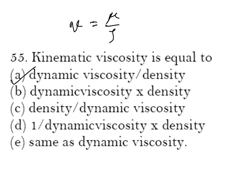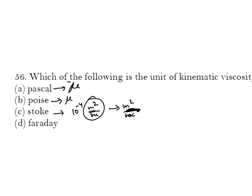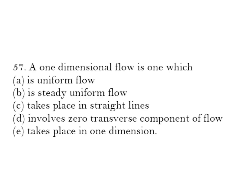Unit of kinematic viscosity: Stoke or 10⁻⁴ m²/s — note that Pascal and Poise are units of dynamic viscosity, so the answer is C (Stoke). One-dimensional flow is one which involves zero transverse component of force and flow takes place in straight lines — D is your correct answer.